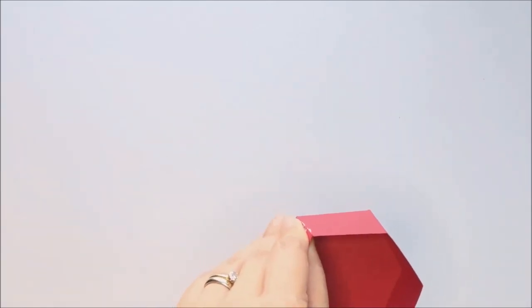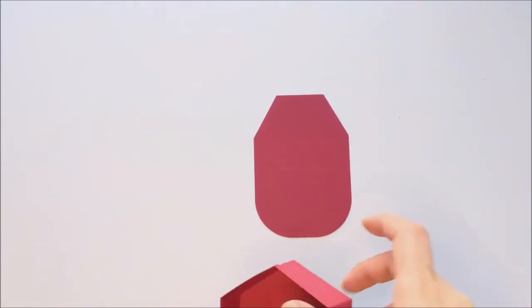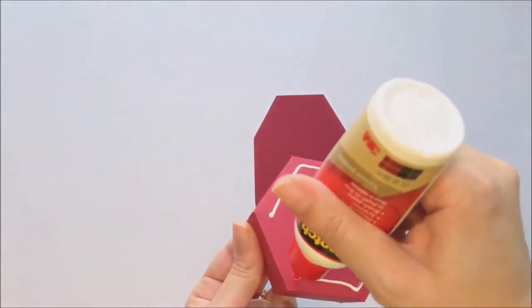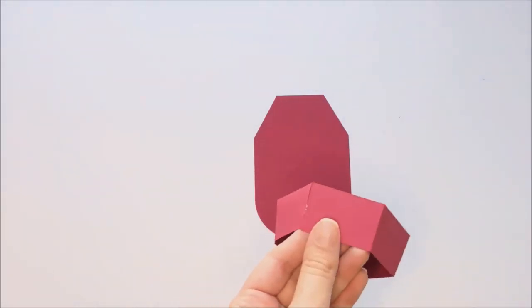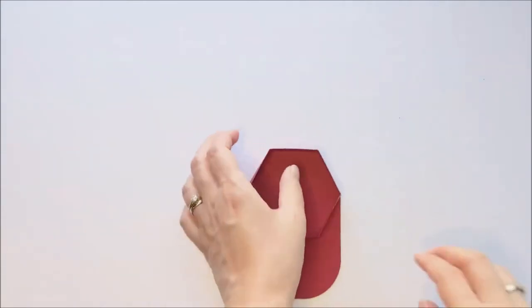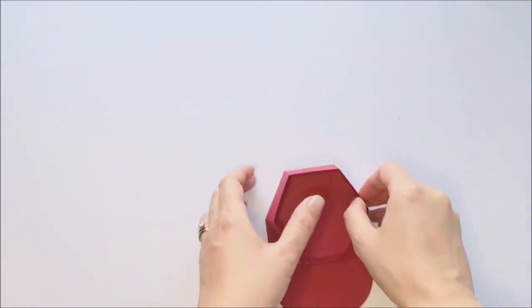Once all your sides are glued, then you're going to glue the container to your brim piece. And then you can just set that aside until the glue dries.